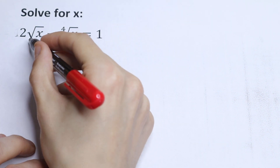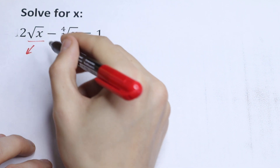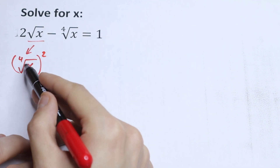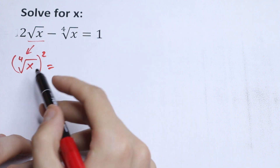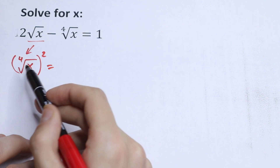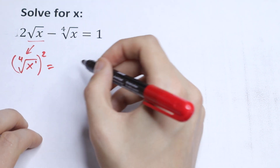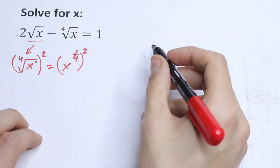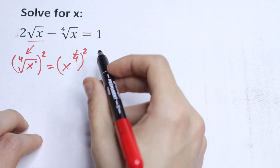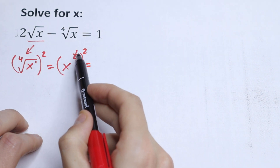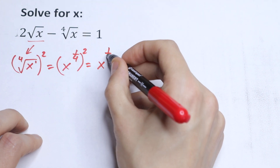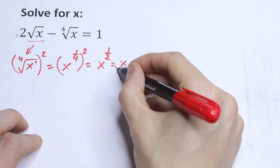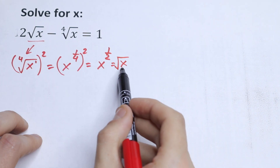Let's simplify the square root of x with the following logic. We can write the square root of x as the fourth root of x raised to the second power. We know that the fourth root of x can be written as x to the power one-fourth, raised to the second power. We can multiply the exponents, so this equals x to the power one-fourth times two, which is one-half — the same as the square root of x.